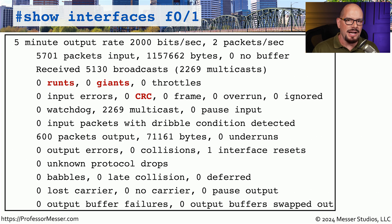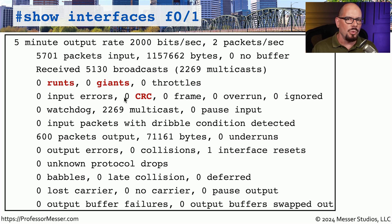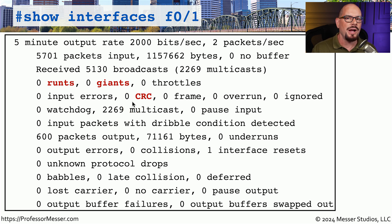Most devices and operating systems give you a way to view these error counters. Here is a set of counters from a Cisco device showing the interface statistics for one of the fast Ethernet interfaces. You can see the highlighted section for runts, giants, CRCs, and other errors associated with this list. This is where we can start to get a warning that something might be going wrong. If we see the CRC error slowly incrementing, that may indicate a problem with a cable or an interface, and we may need some downtime to replace either one.